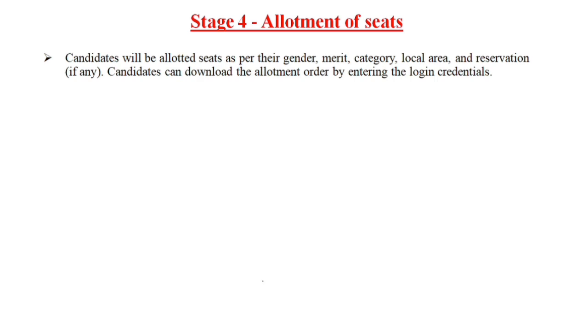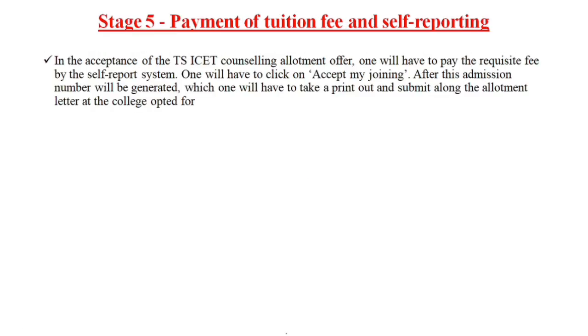Allotment is based on gender, merit, category, local area, and reservation. Once seat allotment is done, you can download the allotment order by entering your login credentials.